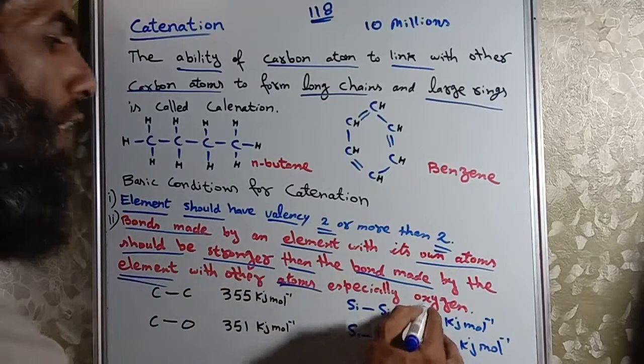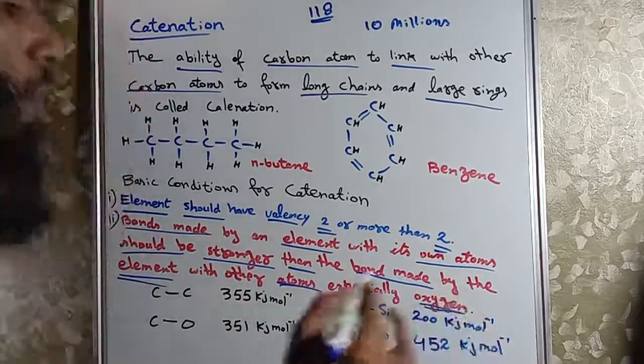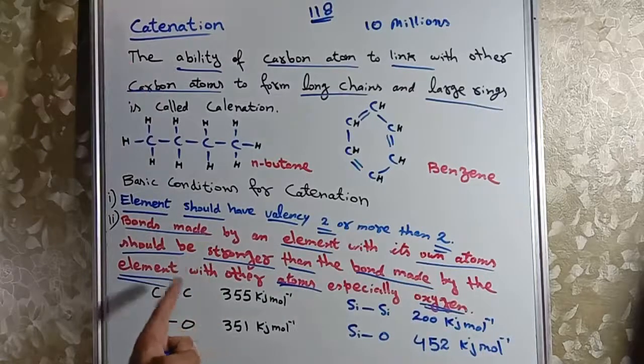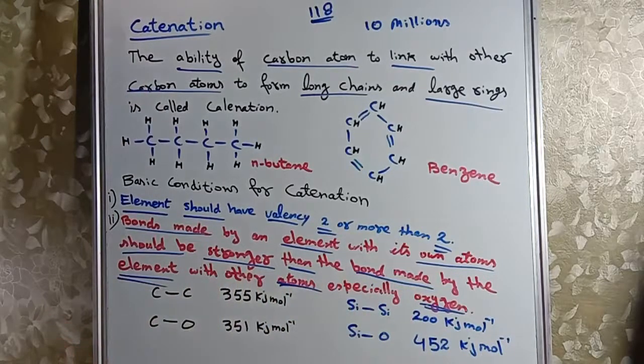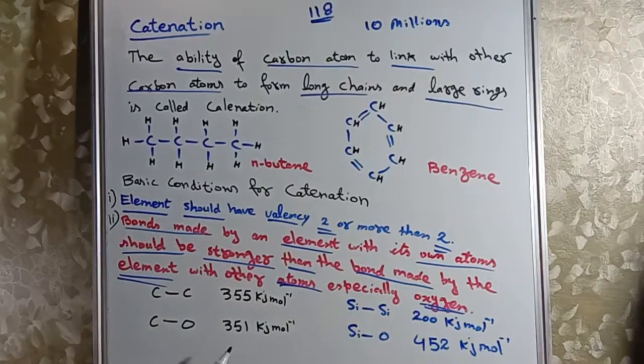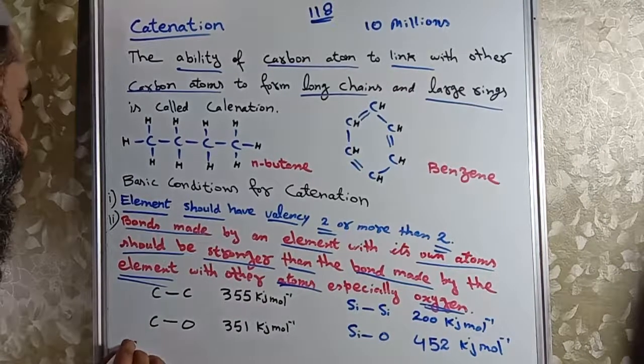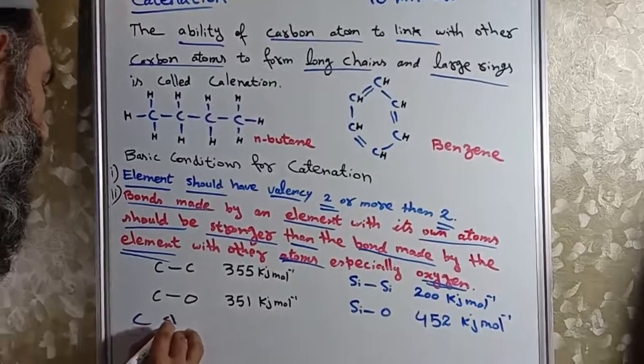Agar wohi element kisi aur atom se bond banaye, especially oxygen, jab woh element oxygen ke saath bond banaye to weak hona chahiye. Ab dekhe sawal yeh hai ke carbon catenation show karta hai.